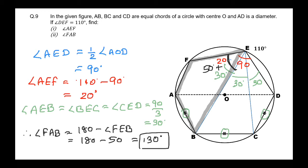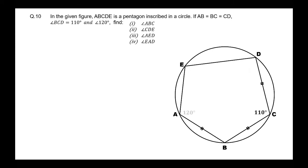So 130 degrees is our second answer and 20 degrees was our first answer. Question number 10: In the given figure, ABCDE is a pentagon inscribed in a circle — a cyclic pentagon with all five points on the circle. Sides AB, BC, and CD are equal. Angle BCD is 110 degrees and angle BAE is 120 degrees. We have to find four angles: ABC, CDE, AED, and EAD.